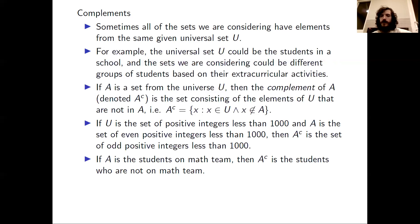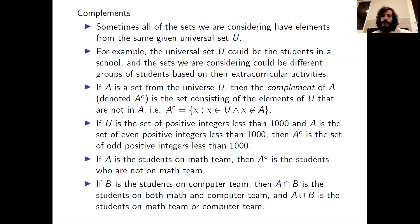For another example, if A is the students on math team and U is the universe of students, then A complement is the students who are not on math team. If B is the students on computer team, then A intersect B is the students who are on both math and computer team. A union B is the students who are on math team or on computer team, so they could possibly be on both or on one or the other.